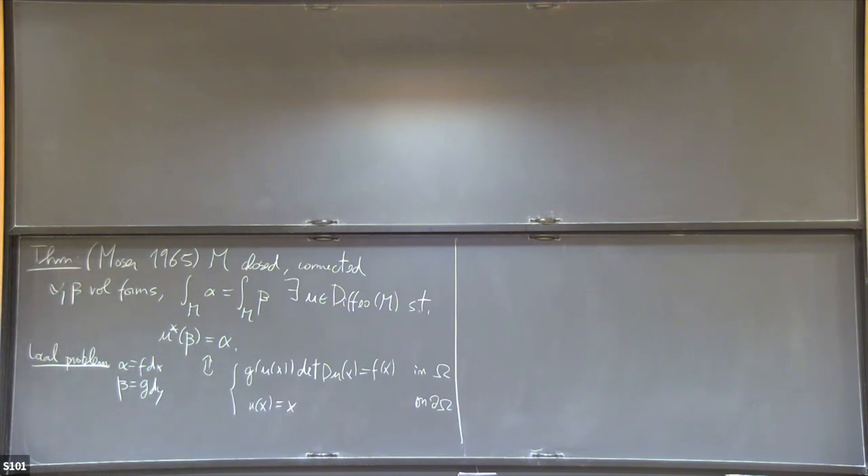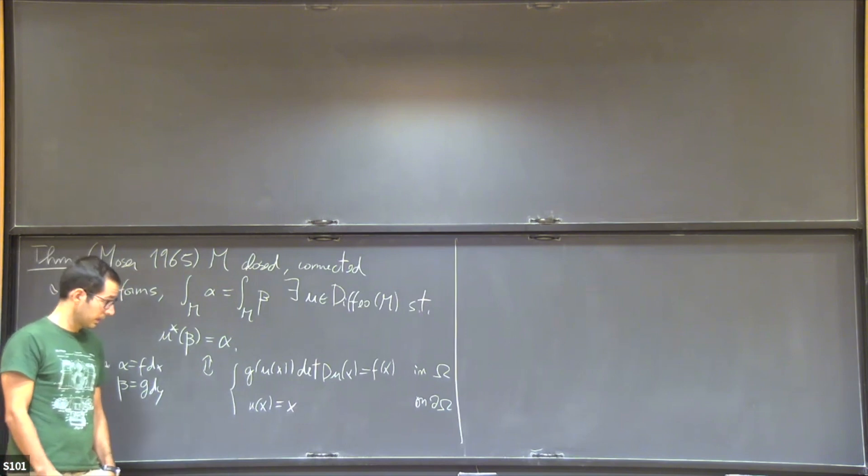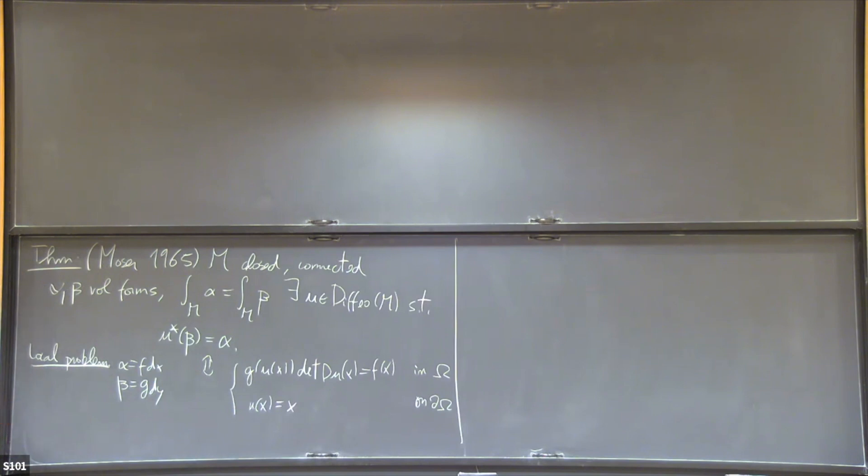What Moser actually does is that he solves this equation. This is a first-order PDE. It looks quite strange. In particular, it has an interesting feature, which is that it's underdetermined. If I have a solution and I pre-compose it with an area-preserving map, I get another solution.